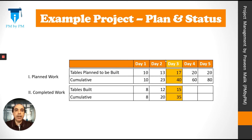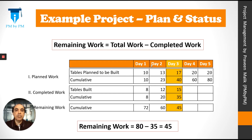Let's look at the current status. On day 3, 15 tables were built that day, and a total of 35 tables were built by the end of day 3. So clearly, we are not going as per the plan — we are behind the plan. We still have to build 45 more tables.